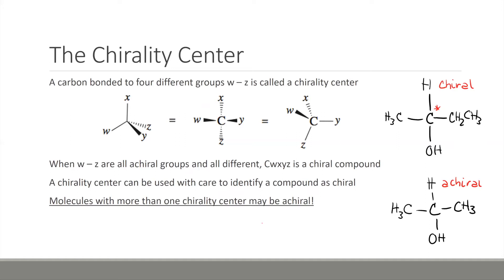Make sure you distinguish that you can have a chirality center — that is just a point within a compound where you have four different groups attached. Normally this does lead to the compound itself also being chiral, so use it with care. A chirality center can usually identify a compound as chiral; however, molecules with more than one chirality center can actually be achiral overall.